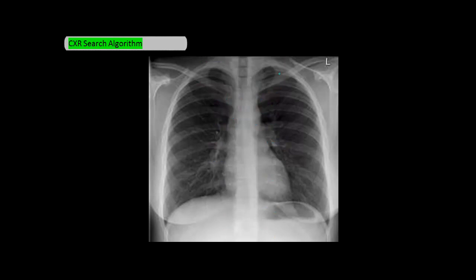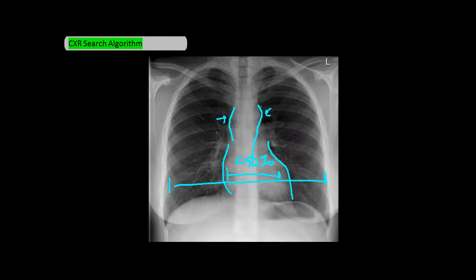For C, or cardiac, you want to look at the borders of the heart and make sure both the left and right borders are sharp. The maximum width of the heart should be less than 50% of the maximum width of the chest — I'm showing you those measurements here. You should also be able to see the aortic knob and the descending aorta going down. The borders of the mediastinum should be sharp and not enlarged. The hila are here and here, and they usually look a bit fuzzy, which is normal.